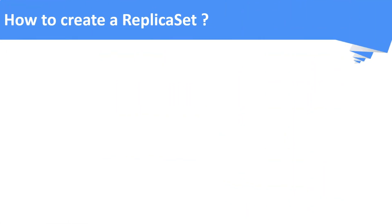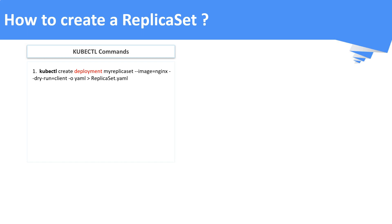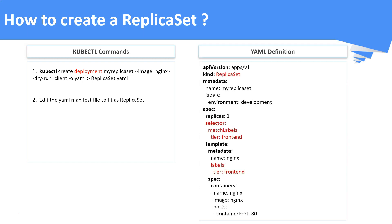How to create a replica set? There is no direct kubectl command to create a replica set, so we have to create it using a deployment manifest. Once you execute the command, it will create a deployment YAML manifest file. Then you have to edit the YAML file to create a replica set object instead of a deployment. A sample edited file will look like this, where the kind should be ReplicaSet instead of Deployment. Finally, apply the replica set definition to create it.